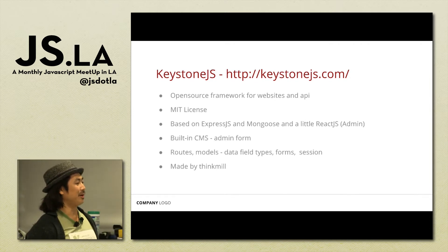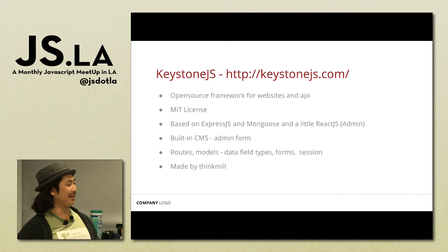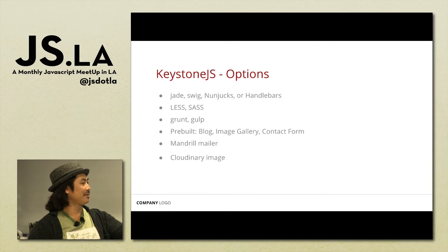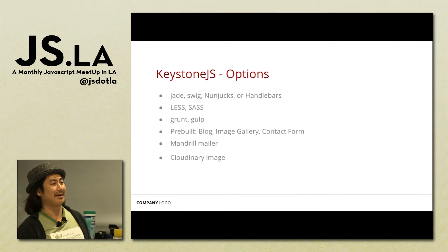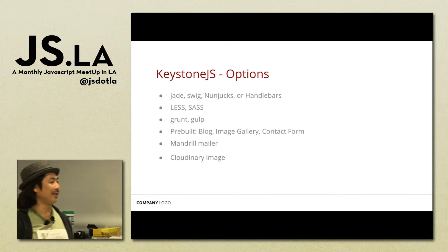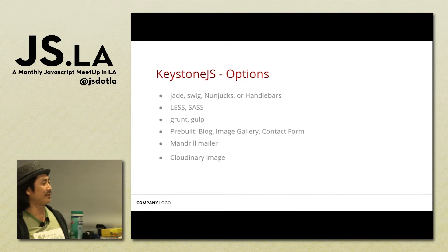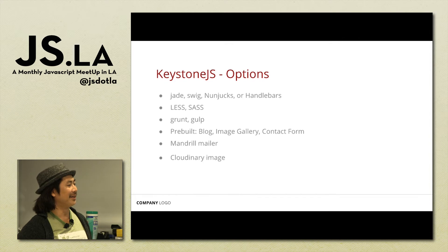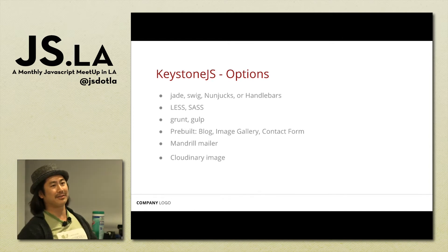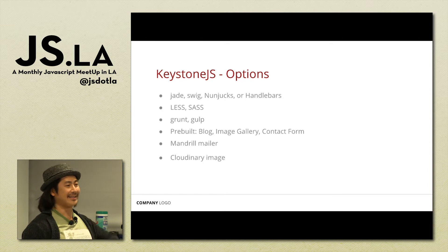Keystone has all these things for routes, models, and building things really quickly. It's made by these guys called ThinkMill in Australia, so thanks to the guys Down Under. It's cool too in that it doesn't force you to use its own thing — you can pick your template language, CSS preprocessor, and task runner. It comes with a pre-built blog, image gallery, and contact form, and integrates with Mandrill Mailer so you can do mail notifications. You can take things out, put whatever you want in, or disable it — it's completely configurable.